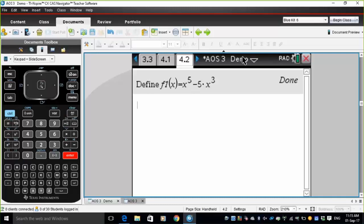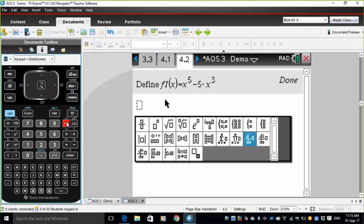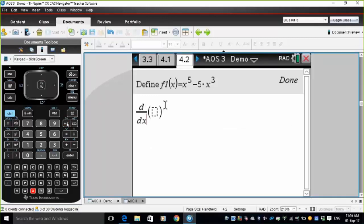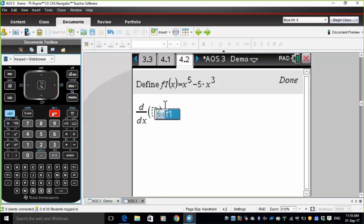Let's find the gradient function. To find the gradient function, we'll use this template next to the book command. The operator that I want, d by dx, is highlighted, so press enter. Type in the x, move across into the bar section here and press var to type in f1 and just type in the x.